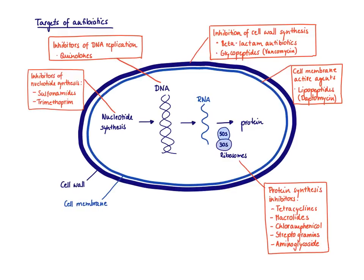The cell wall is an ideal target because eukaryotic cells don't even have one, so we can inhibit cell wall synthesis. We do this with cell wall synthesis inhibitors. The most famous group is the beta-lactam antibiotics, which include penicillins and cephalosporins. There's also another group called the glycopeptides — for example, vancomycin — which also inhibits cell wall synthesis, just in a slightly different way than the penicillins and cephalosporins.